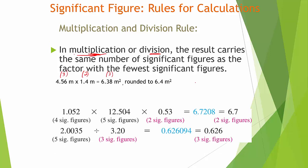So for multiplying and dividing: the number with the fewest significant figures is what influences your answer. Here's a worked example — one number has four significant figures, another has five, another only has two. The calculator gives a long number, but you have to round to only two significant figures. For dividing — same rule: five significant figures divided by a number with three gives an answer rounded to three significant figures.